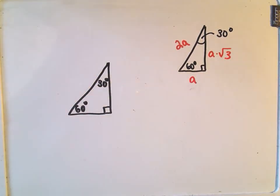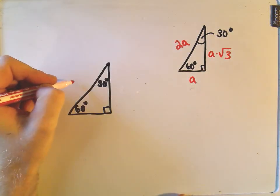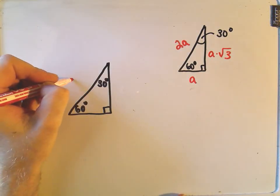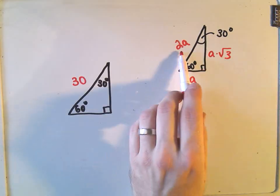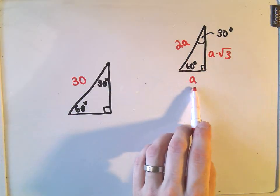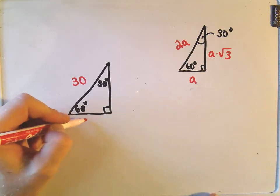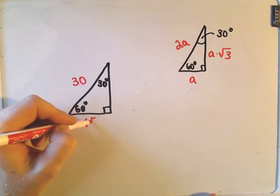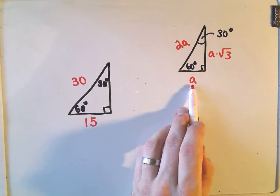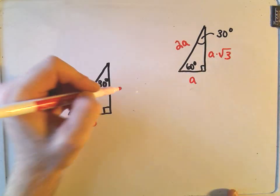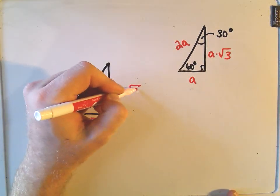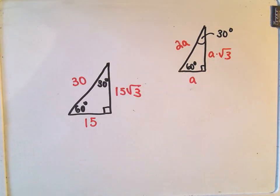Now suppose we know the hypotenuse — say it has value 30. To get the side opposite 30 degrees, we just divide that by 2: 30 ÷ 2 = 15. And once we know the side opposite 30 degrees, we multiply it by √3 to get the side opposite 60 degrees: 15√3.